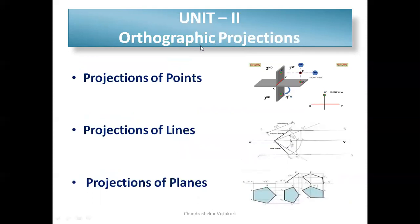Unit two is orthographic projections. It also has three categories: projection of points, projection of lines, and projection of planes. For projection of points, we have quadrant problems — one to four quadrant problems, as well as lying on HP and VP. Coming to projection of lines, the compulsory question most of the time will be inclined to both HP and VP. For planes, any one plane inclined to both HP and VP will be asked as a compulsory question.